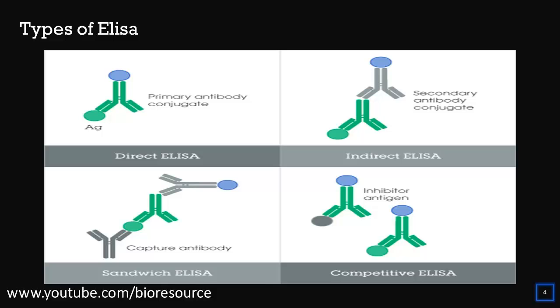In sandwich ELISA, the plate well is coated with a capture antibody. Then the sample is added, followed by either a secondary antibody with a conjugate or a secondary antibody, and then a detection antibody is added.